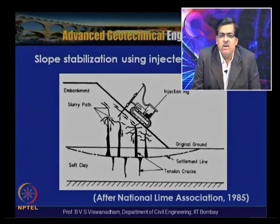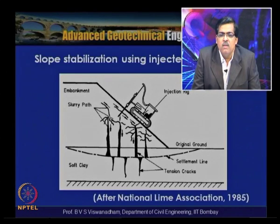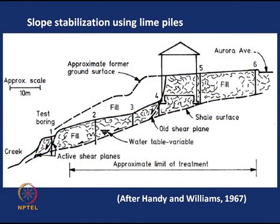For highway and railway embankments posing problems due to swelling and shrinking cycles, this technique seems promising. However, in the field the injection must be carried out at appropriate pressure with appropriate quality lime. A typical slope stabilization using lime piles for a clay soil shows the approximate lime treatment limit, with the portion improved by installing lime columns.